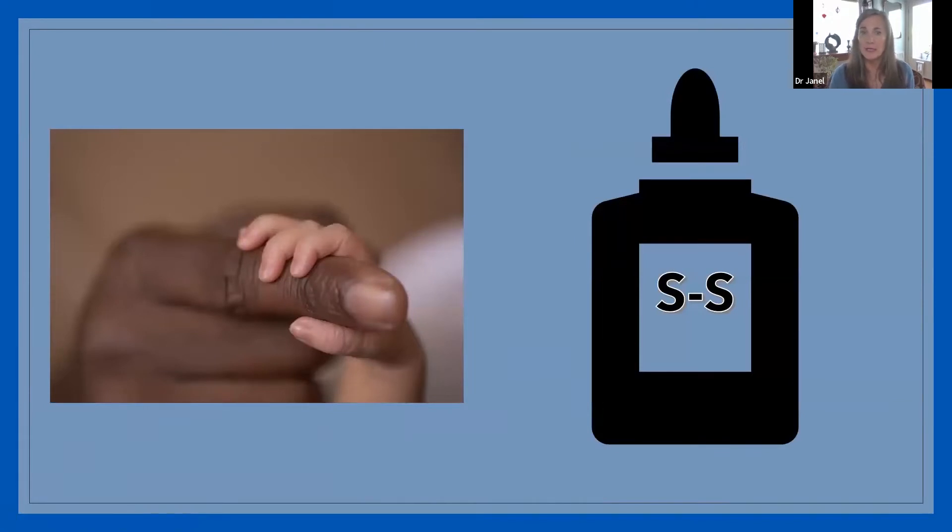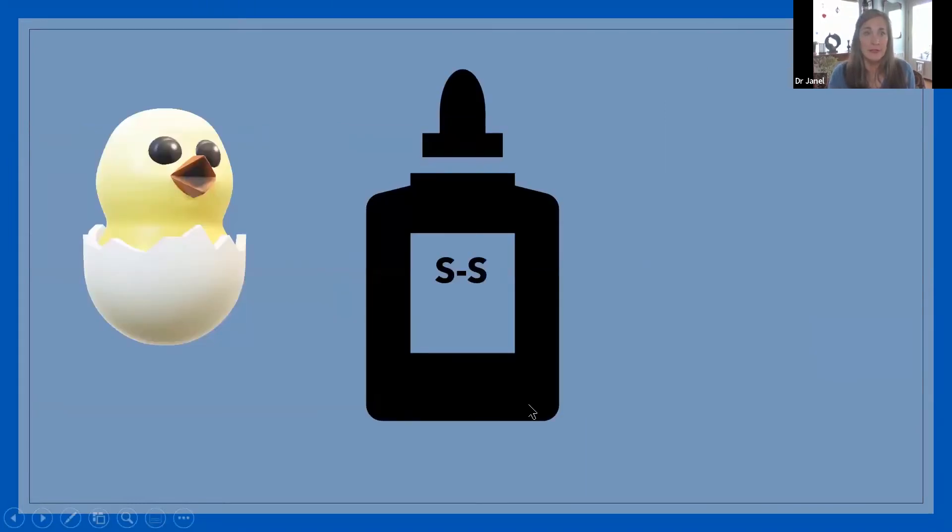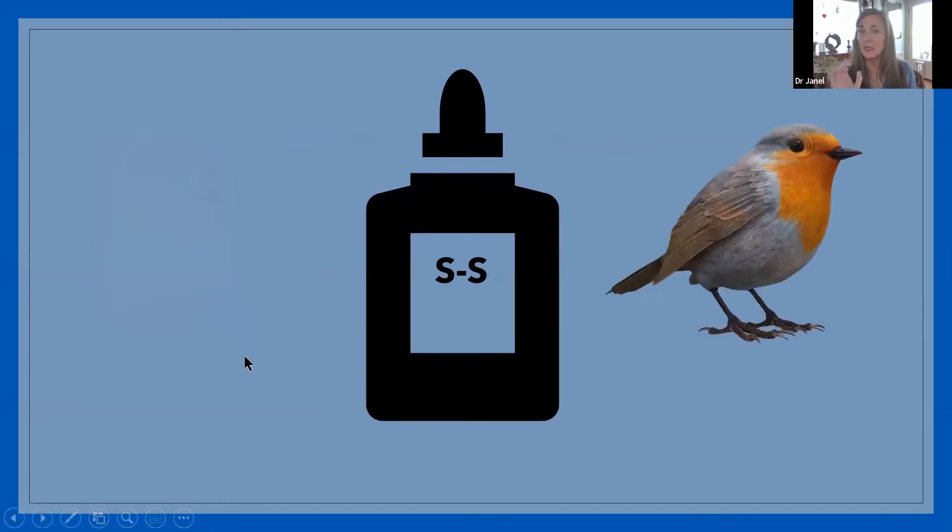There are even more of the disulfide bonds, creating more rigidity in things like fingernails. And if you've ever smelled a rotten egg, you would smell sulfur. There's a lot of sulfur in eggs. And the reason for that is because you need that sulfur in order for that flexible and strong feather development, beak development, talon development. So there's a lot of sulfur that has to go into the development of something that has feathers on the outside of it.